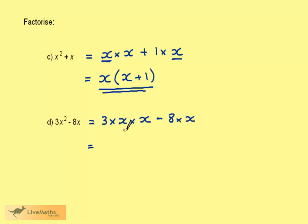If we look for common factors, we only have x in both terms. So we write down the x. We are left with 3 times x, which we can write as 3x, the minus sign, and the 8.